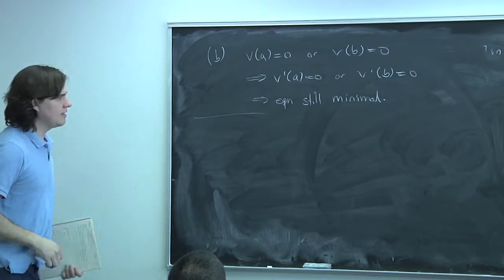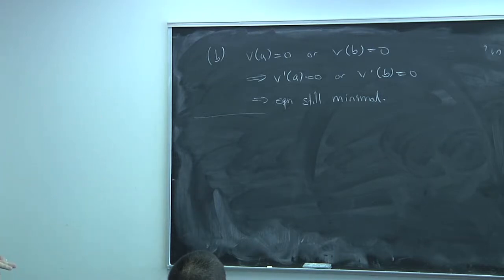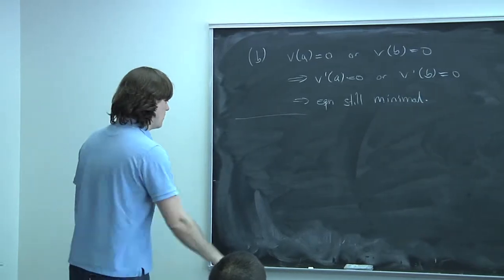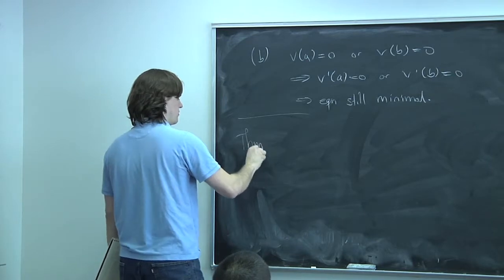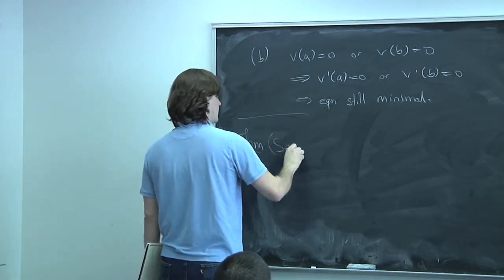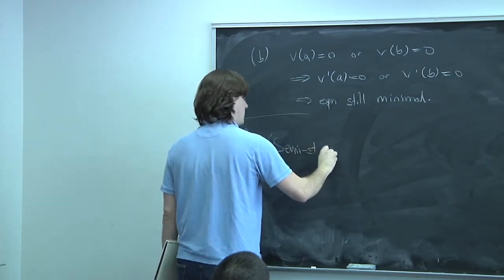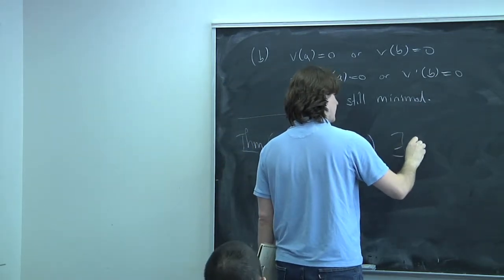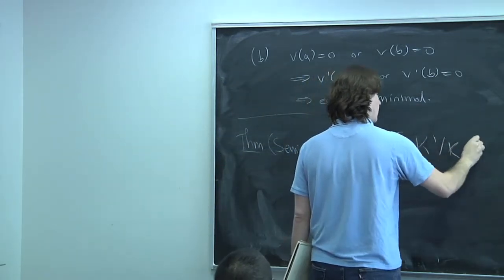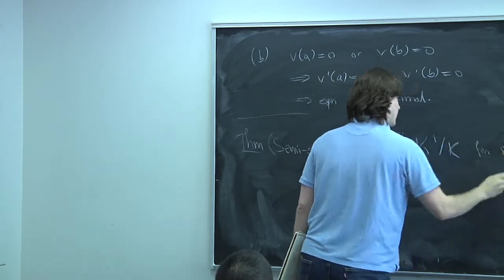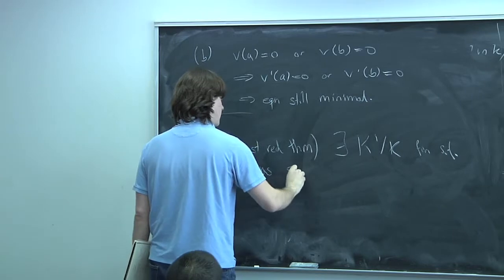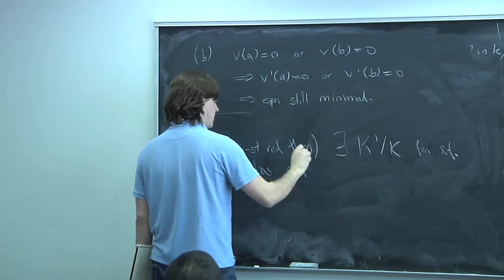I didn't say anything about what happens if you have additive reduction over K when you go up to K'. This theorem doesn't say anything. In fact, you can always make additive reduction go away. This is an important result — the semi-stable reduction theorem: there exists a finite extension K'/K such that E has semi-stable reduction over K'.